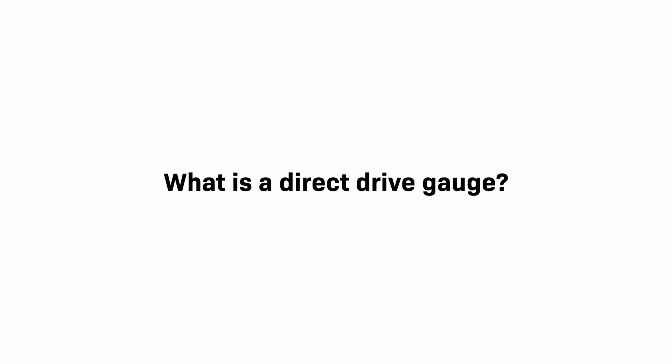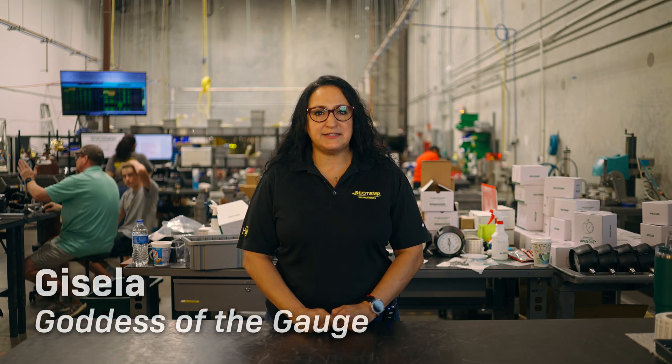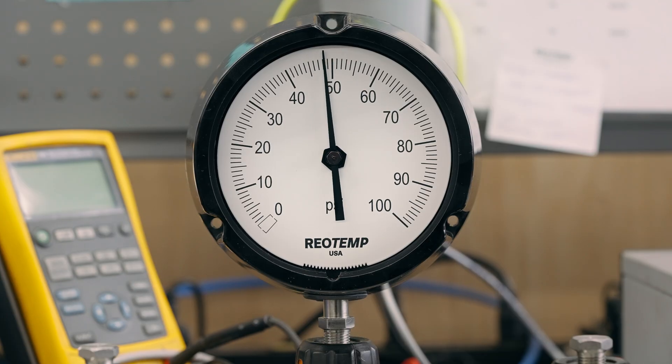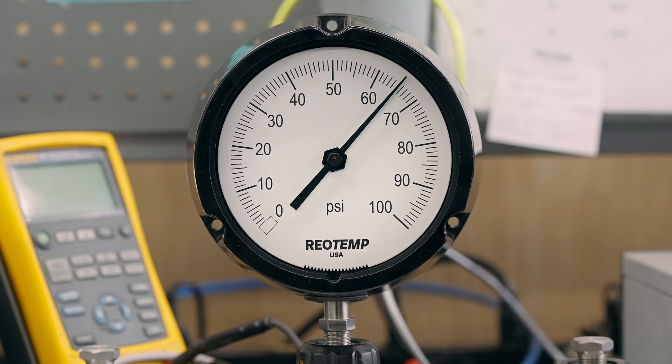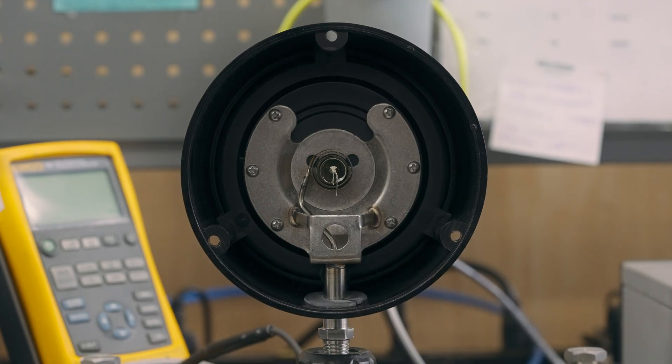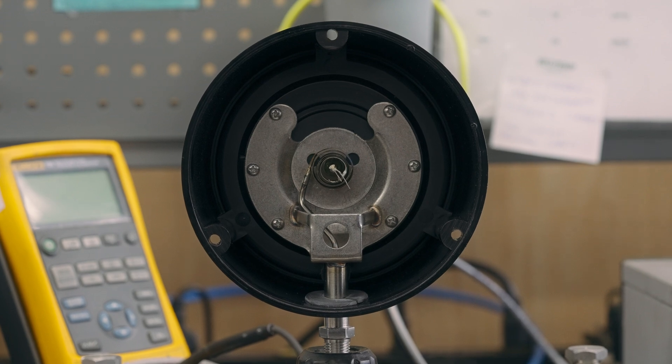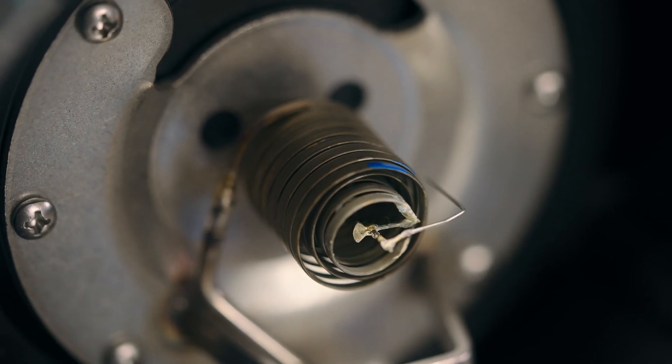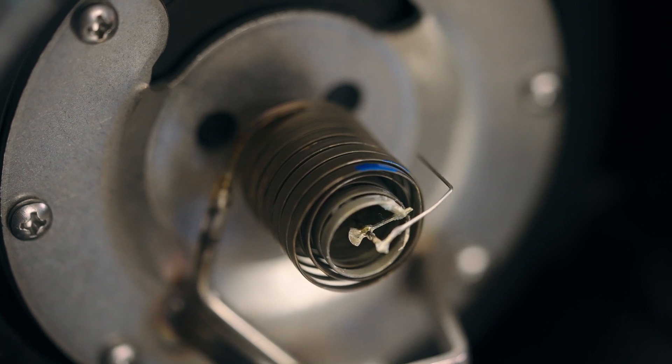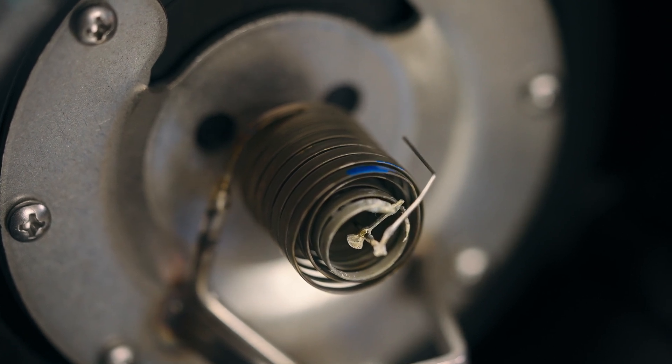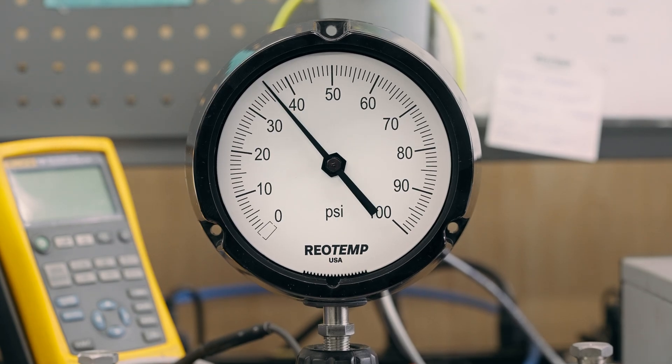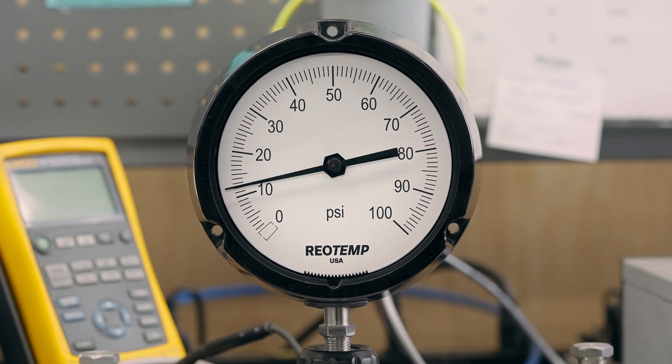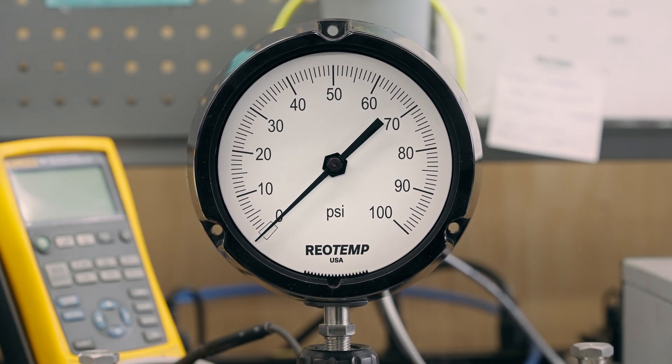What is a direct drive gauge? A direct drive gauge eliminates the need for gears or linkages by directly transmitting pressure to the sensing element. This design ensures immediate response to pressure changes and minimizes potential mechanical failures associated with complex transmission systems.